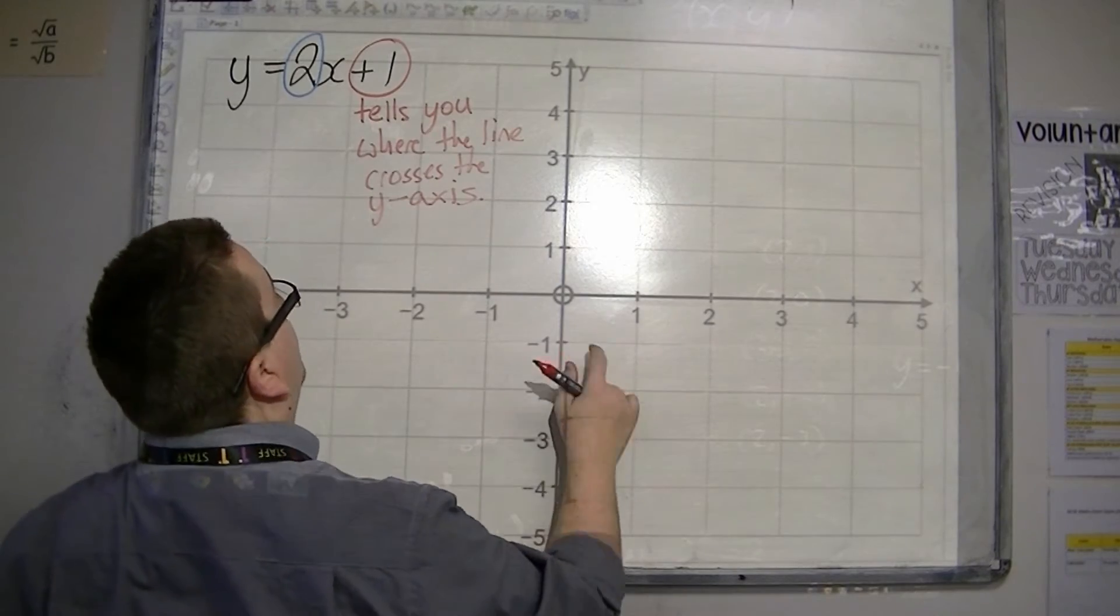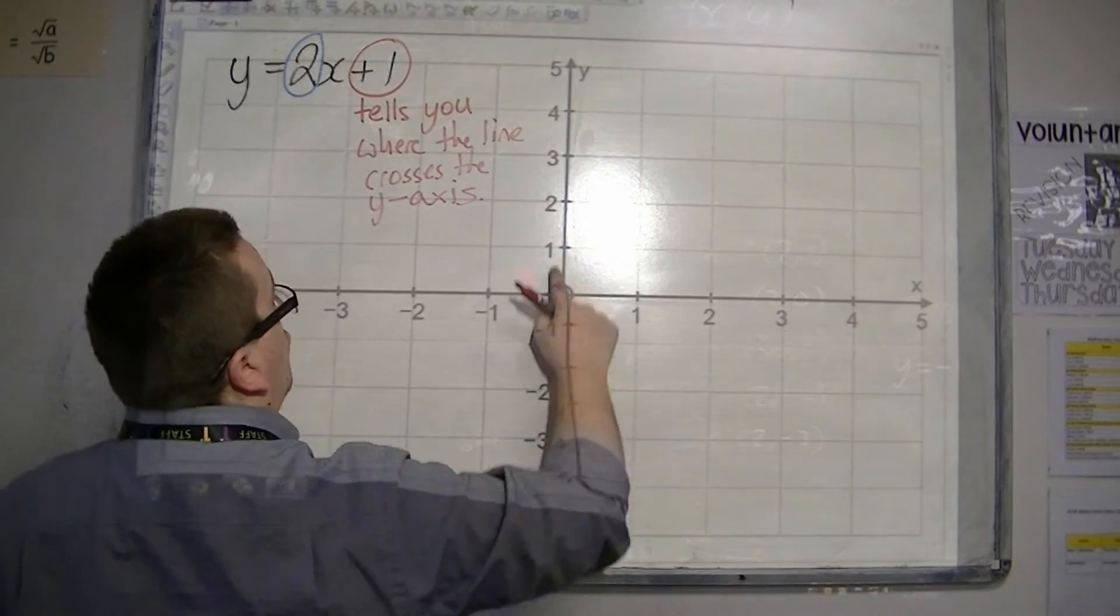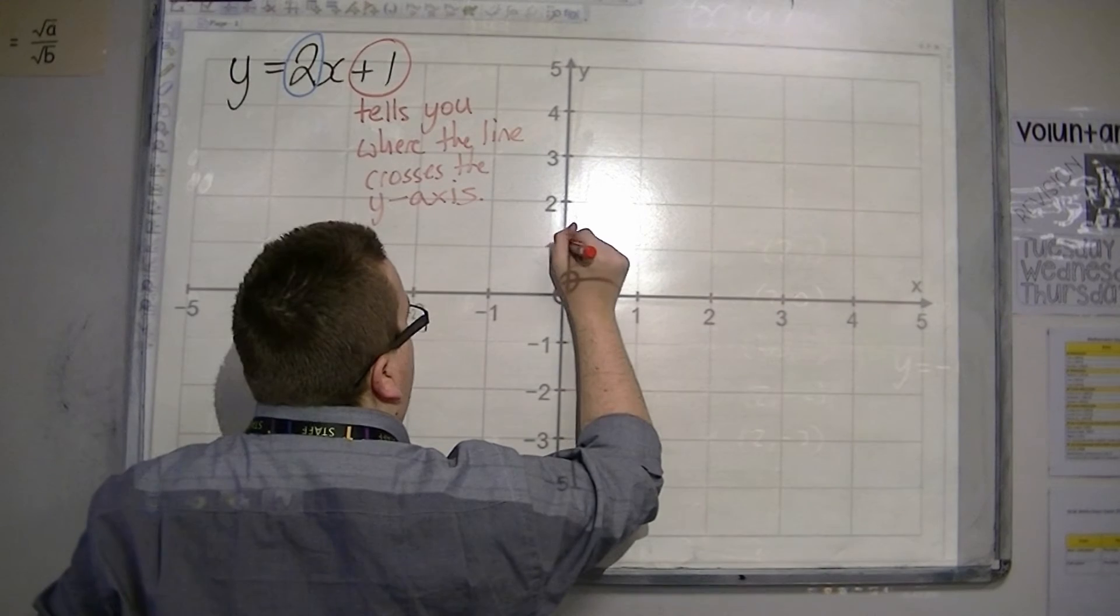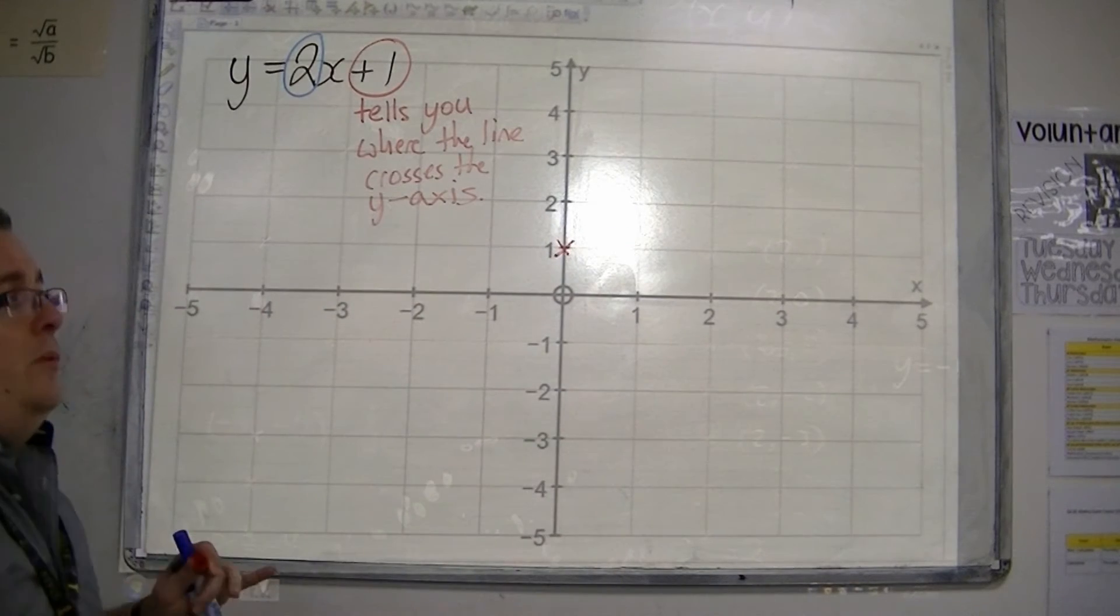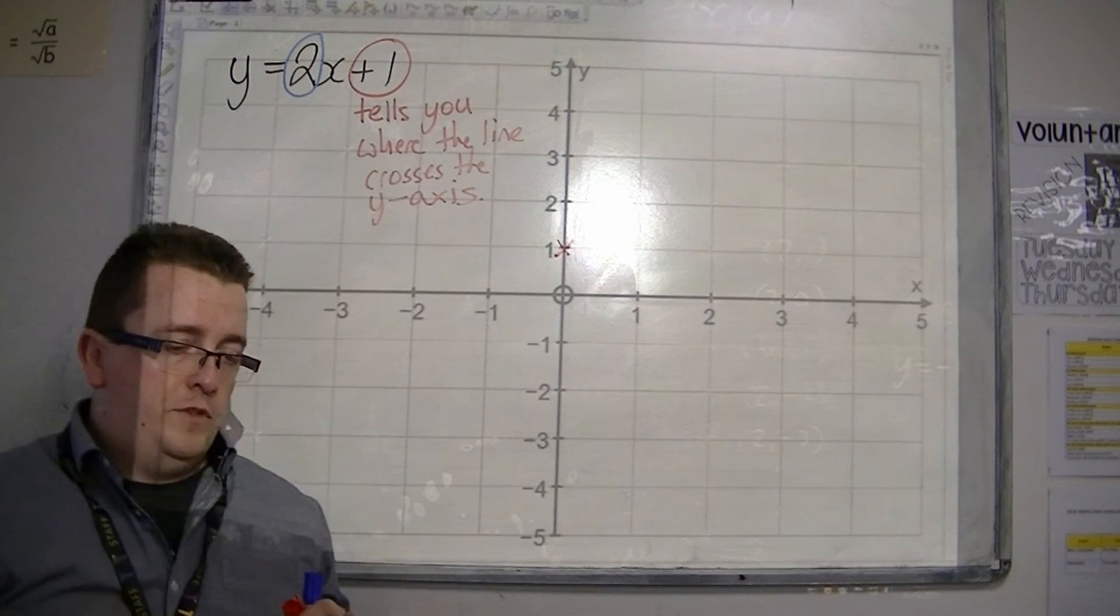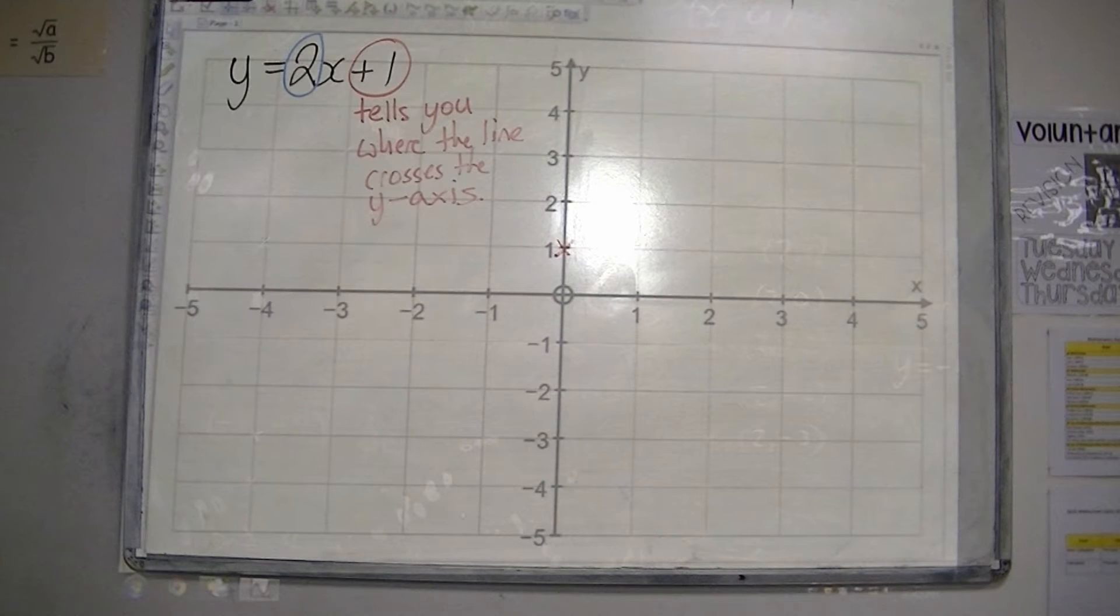And so you just need to find positive 1 on the y-axis, and it's there, and that is a point on your line. That is the first bit of information we need.